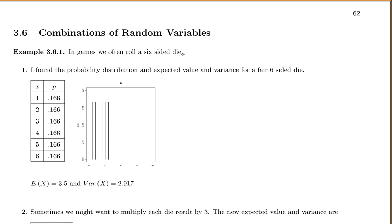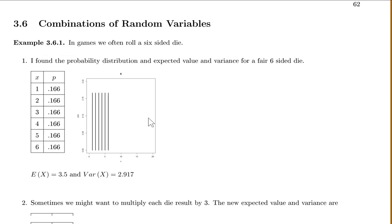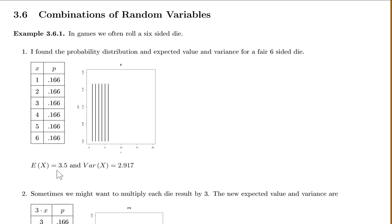In games, we often roll a six-sided die. I found the probability distribution, expected value, and variance for a fair six-sided die. You have the possibilities from 1 to 6, all equally likely, so each probability is 1/6 or 0.166. They all have the same probability — it's a pretty boring distribution. The expected value is 3.5 and the variance is 2.917. That's just if I roll one die.